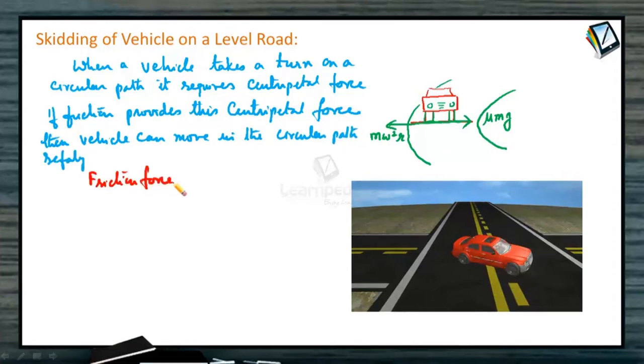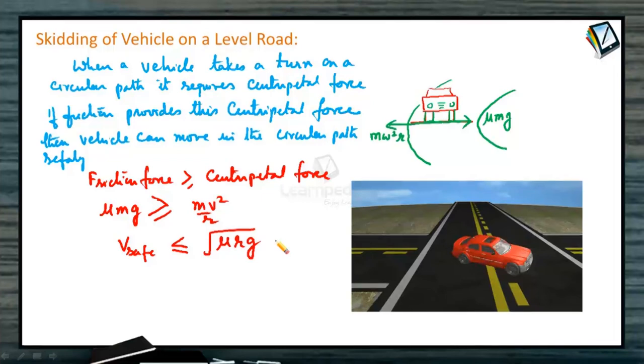Friction force must be greater than or equal to required centripetal force. That means, mu Mg, mu into normal reaction, must be greater than or equal to Mv square by R, or the safe speed should be less than or equal to root of mu Rg. This is the maximum speed by which a vehicle can take a turn on a circular path of radius R, where mu is the coefficient of friction.